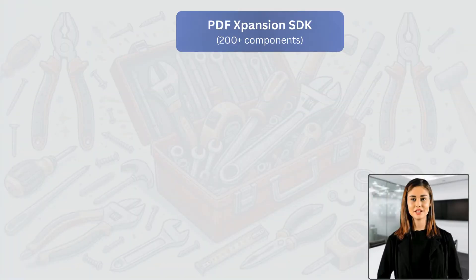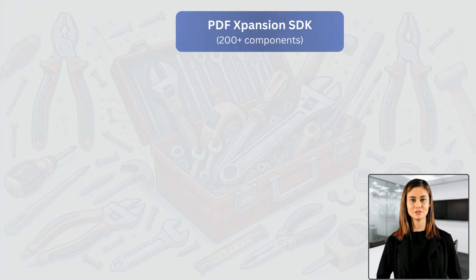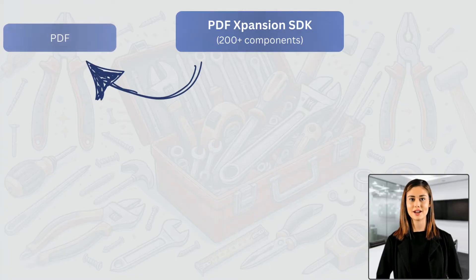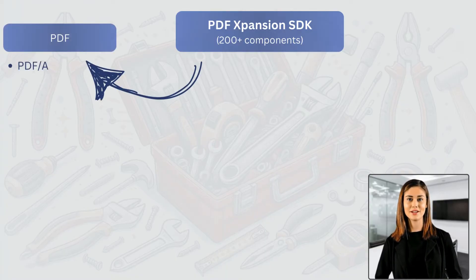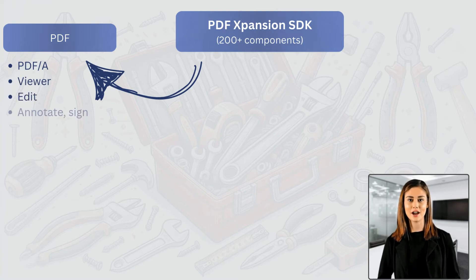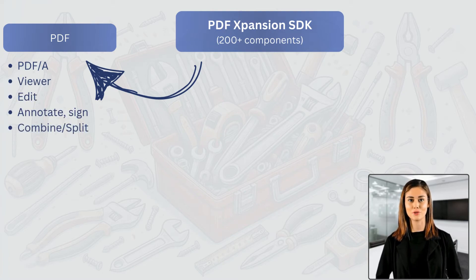The PDF Expansion SDK consists of four main core parts with more than 200 different components. The largest part of the software library is the PDF functionality, which includes a range of features including PDF-A, a pre-built viewer, editing, commenting, merging functionality, and much more.